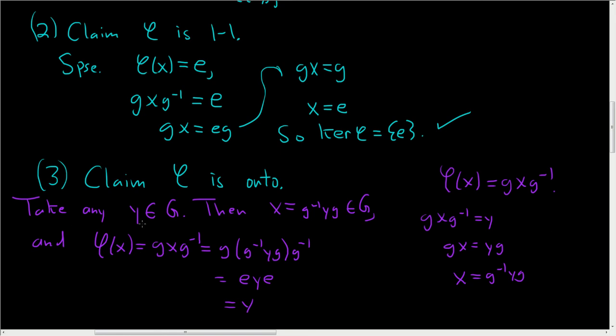So we took an element y in G. We found an element x in G, such that φ(x) is equal to y. That's precisely what it means for φ to be onto. And so φ is onto.